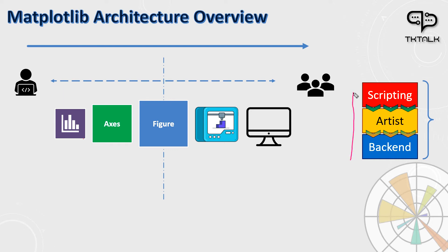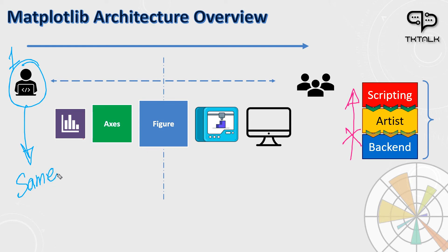Each layer that sits on top of another layer knows only how to talk to the layer below it, but the lower layer is not aware of the layers above it. This limitation in the interfaces and encapsulation of all matplotlib functionality and features in three separated layers provides many mutual benefits.